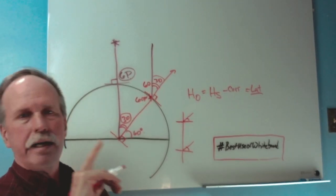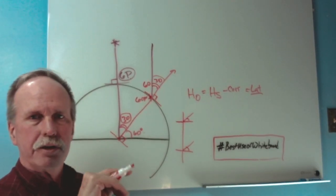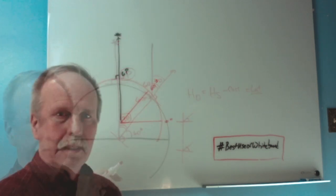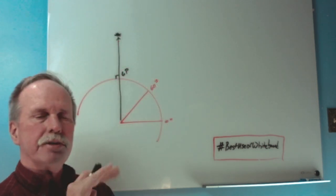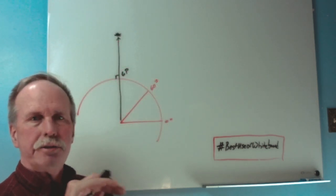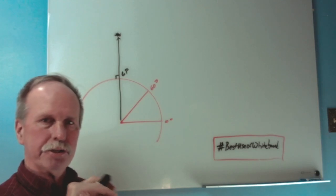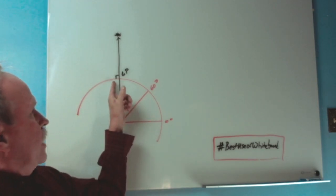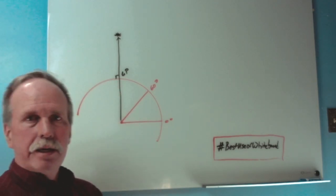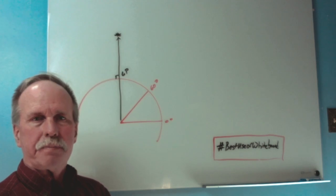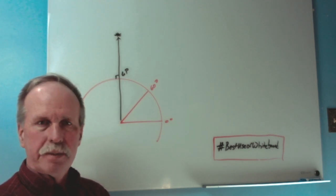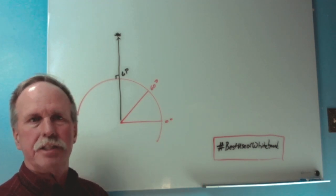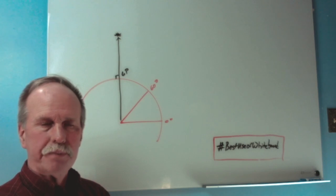Now let's have a look at something called circles of equal altitude. The circles of equal altitude seem to be a major source of confusion. People like to look at this right angle here at the geographic position and think that it means something other than the fact that that's the geographic position of the star.